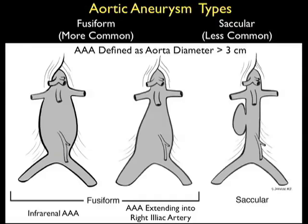This illustration shows the types of abdominal aortic aneurysms that may be encountered in clinical practice. The more common type is defined as fusiform, or diffuse dilatation of the abdominal aorta. Remember that a AAA is defined as an aortic diameter greater than 3 centimeters. Looking at the picture towards the far left, we see a diffuse dilatation of the aorta beginning below the renals and ending just above the bifurcation into the iliac arteries.